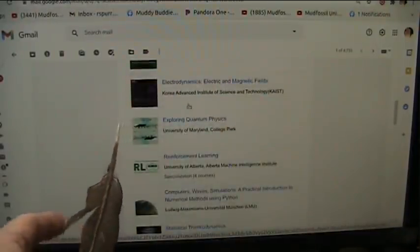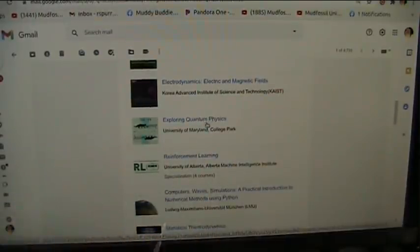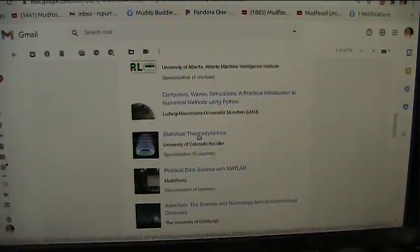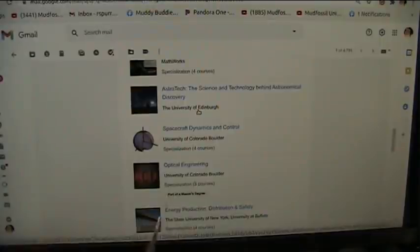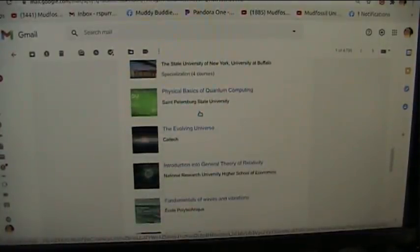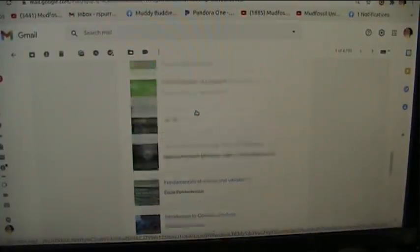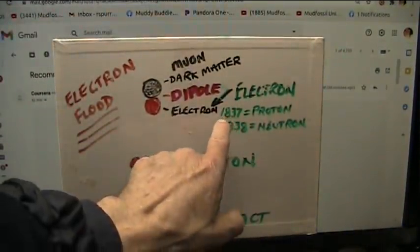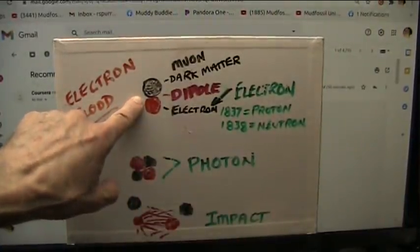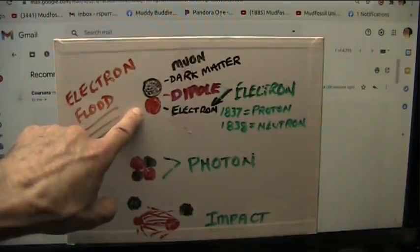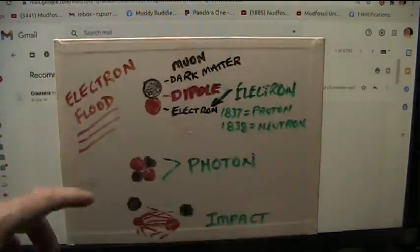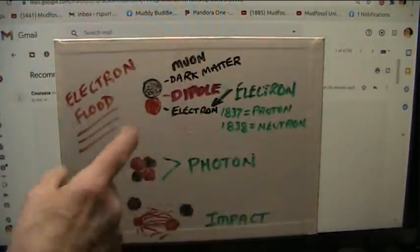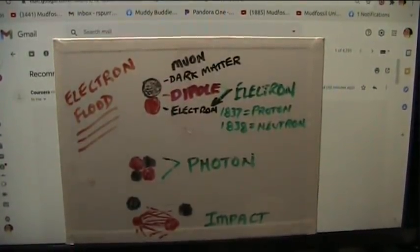Electromagnetic fields, magnetic fields, quantum physics, wave simulations, statistical thermodynamics. I've taken all this stuff, not these particular courses at these places, but I've gone through all that stuff many, many times. I think I now understand much more than they do. I will stand in front of anyone and show my work and my theory of electron flood theory, which simplifies everything. 1,837 of the electrons which are dark matter and the electron explosive part makes a proton. All atoms are is bigger and bigger snowballs, and those are the snowflakes.